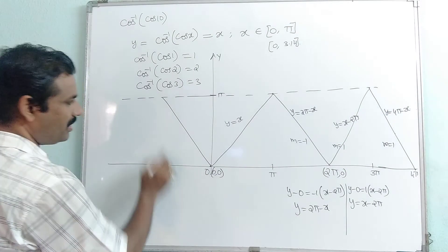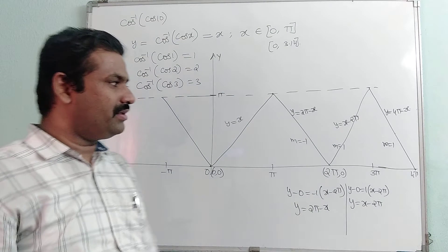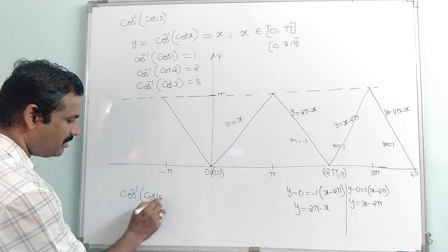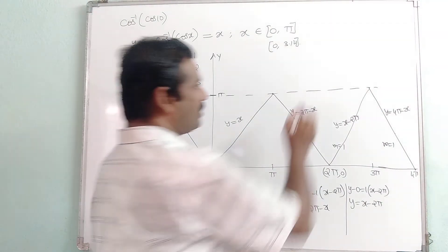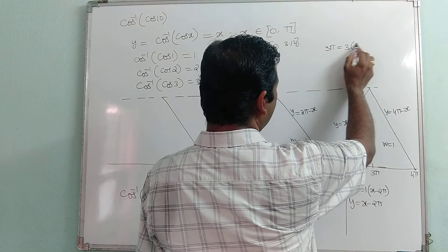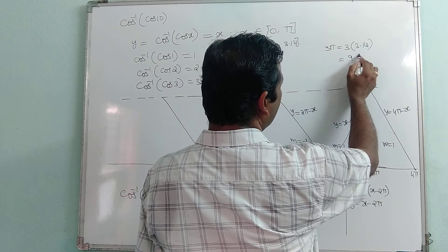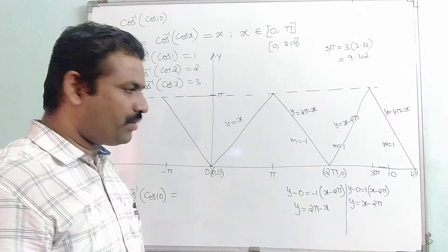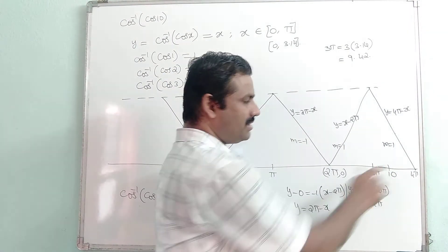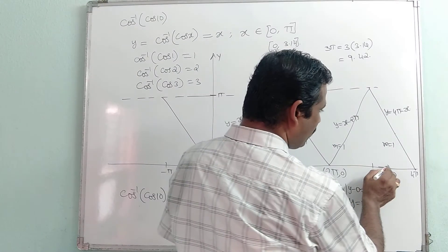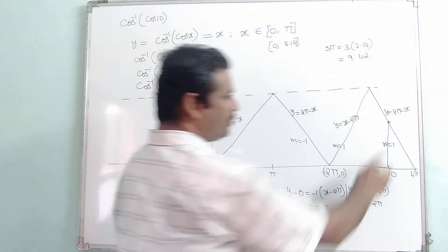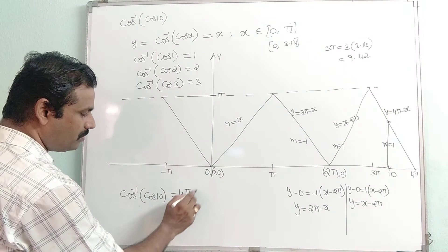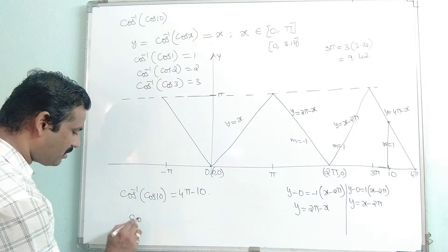Now we find cos inverse of cos 10. We check where 10 lies on the graph. The value of 3pi is 3 times 3.14, which equals 9.42, and 4pi is 4 times 3.14, which equals 12.56. So 10 lies in the interval between 3pi and 4pi. In that interval the graph equation is y equal to 4pi minus x. Putting x equal to 10, cos inverse of cos 10 equals 4pi minus 10.